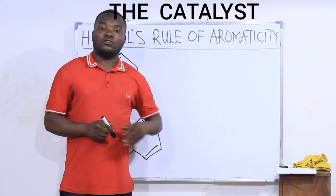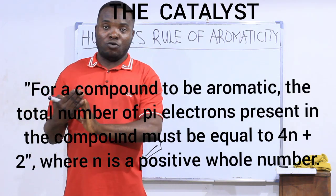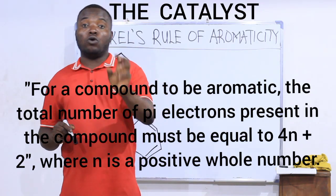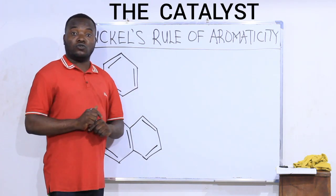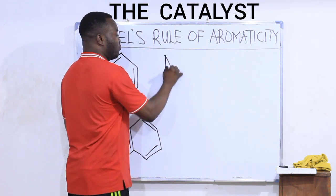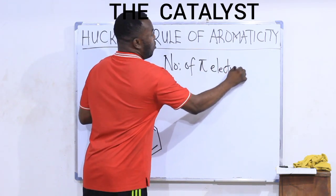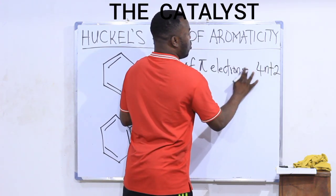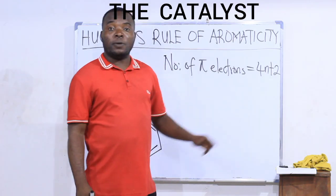What is Hückel's Rule talking about? Hückel's Rule states that for a compound to be aromatic, the total number of pi electrons present in that compound must be equal to 4n plus 2 — that is, the number of pi electrons in the compound must equal 4n plus 2, where n is a positive whole number.